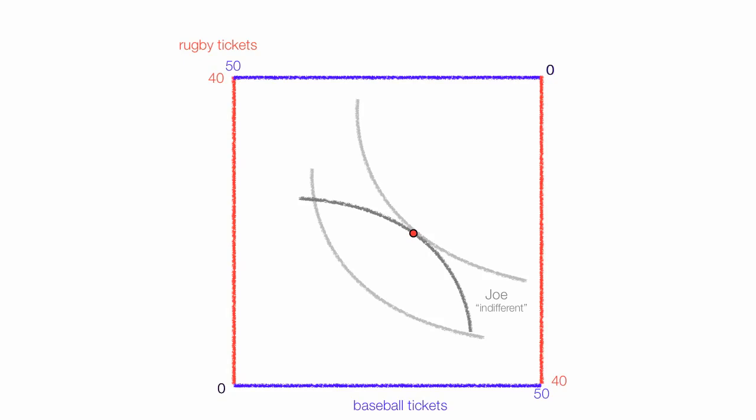They'll eventually meet and trade there because it represents an efficient level of trading. Again, to that point right there. Along that curve, Joe is the same. He's no worse off as we often say.